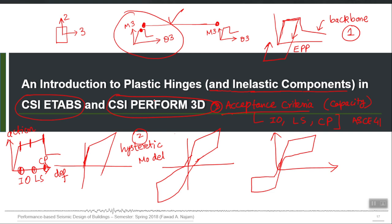For example, you can call the first level 'minor cracking' and associate a strain corresponding to that minor cracking. Just as in ETABS you define IO and give a strain, rotation, or deformation on the x-axis, in Perform 3D you can define up to level 5, give the capacities as deformations, and assign your own names — such as 'minor tensile cracking in concrete,' 'minor yielding,' 'just yielded,' 'significant yielding,' or 'ultimate failure.'